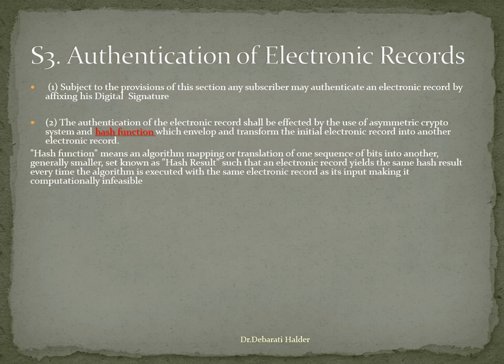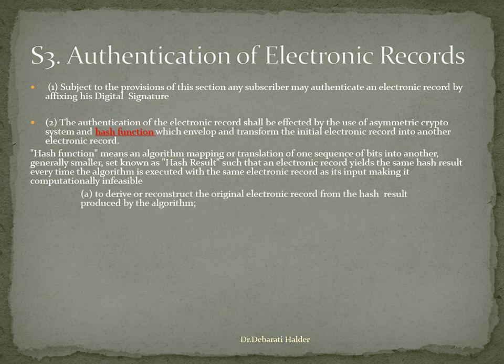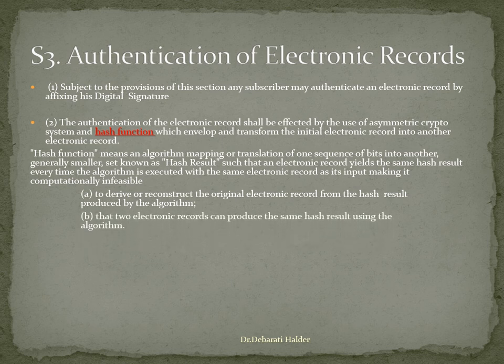This provision also defines it by stating that hash function means an algorithm mapping or translation of one sequence of bits into another generally smaller set known as hash result, such that an electronic record yields the same hash result every time the algorithm is executed with the same electronic record as its input, making it computationally infeasible. Subclause A says to derive or to reconstruct the original electronic record from the hash result produced by the algorithm. Subclause B says that two electronic records can produce the same hash result using the algorithm.